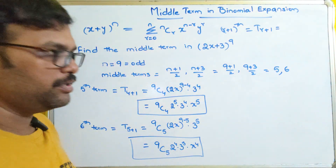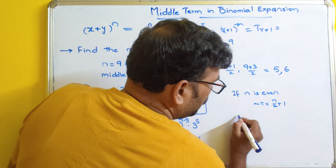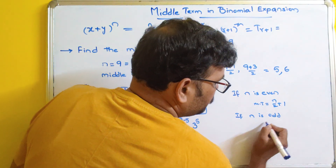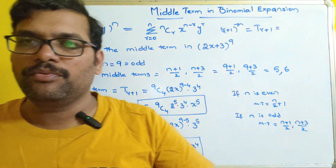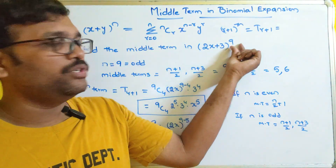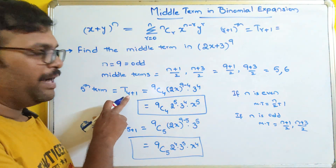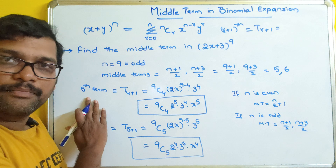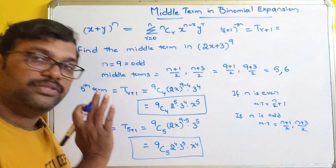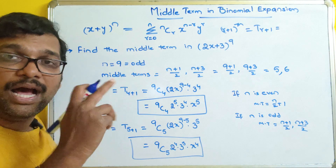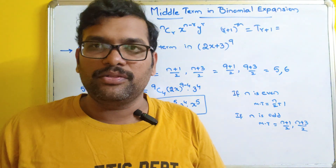To summarize: if n is even, the middle term is the (n/2 + 1)th term. If n is odd, the middle terms are the ((n+1)/2)th and ((n+3)/2)th terms. First check whether n is even or odd, then apply the appropriate formula to find which term number is the middle term. Remember that r equals one less than the term number, since the expansion starts from r = 0.